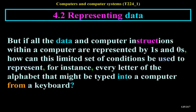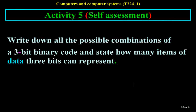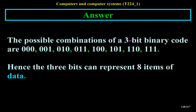If all data and instructions within a computer are represented by ones and zeros, how can this limited set represent every letter of the alphabet? Activity 4 showed there are four possible combinations in a two-bit binary code, so with only two bits you could represent only four different letters: A = 00, B = 01, C = 10, D = 11. Activity 5 asks for all possible combinations of a three-bit binary code: 000, 001, 010, 011, 100, 101, 110, 111 — hence three bits can represent eight items of data.